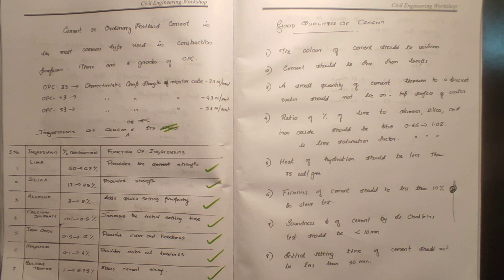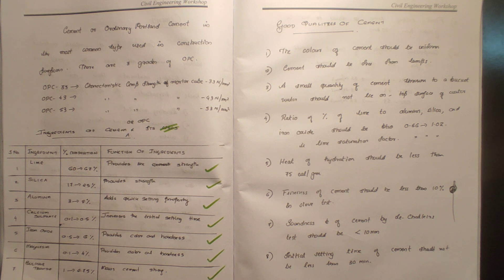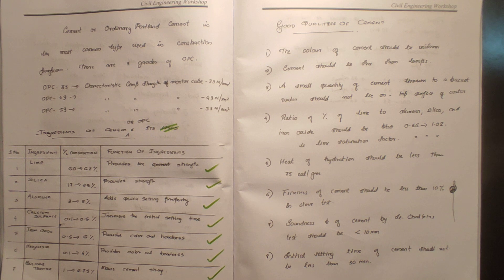The initial setting time of cement should not be less than 30 minutes. When cement is mixed with water, it has both elastic and plastic properties. The final setting time of cement should not exceed 600 minutes.